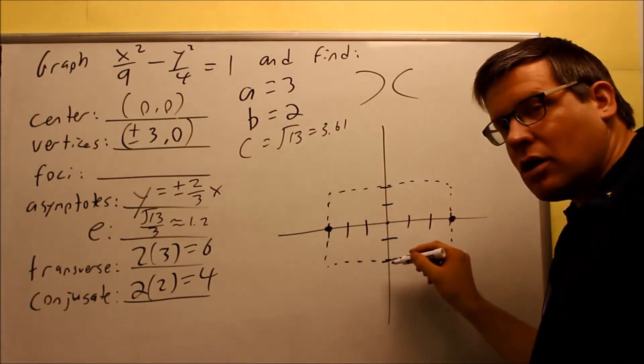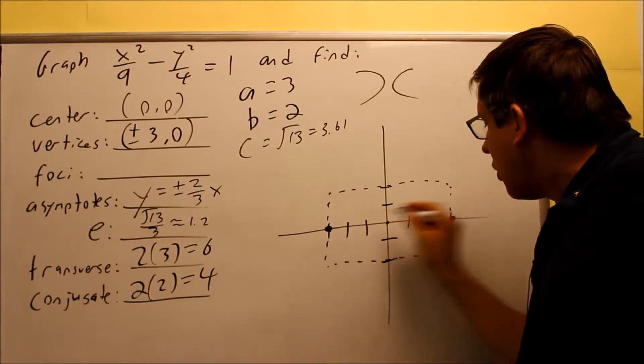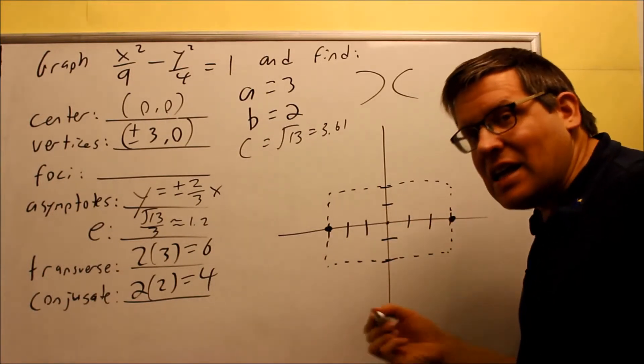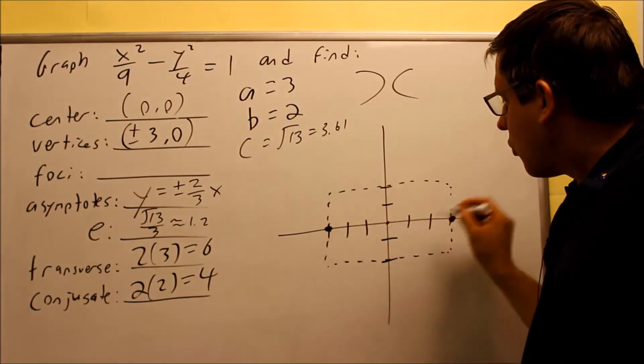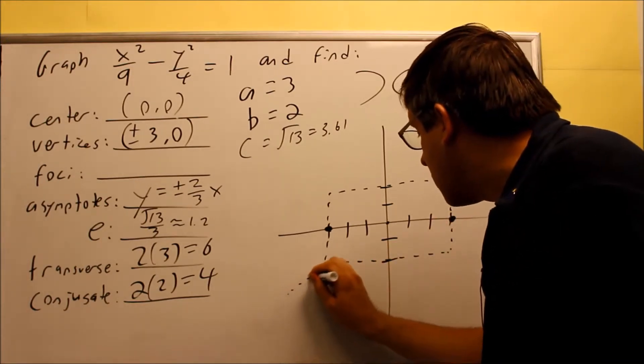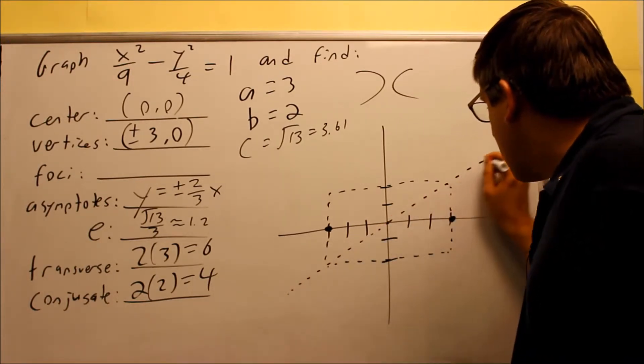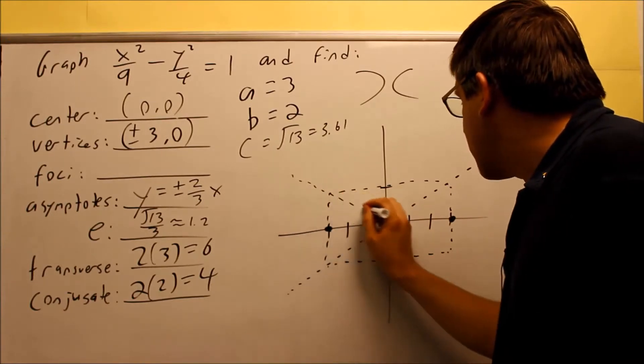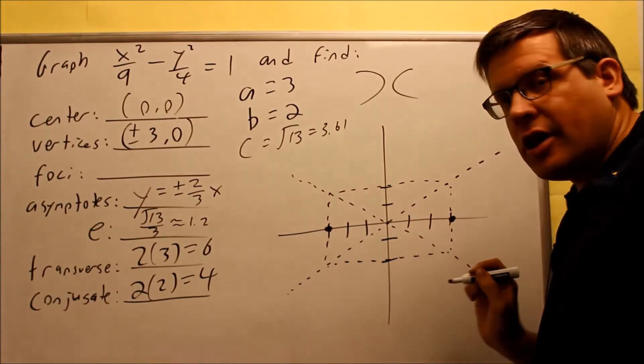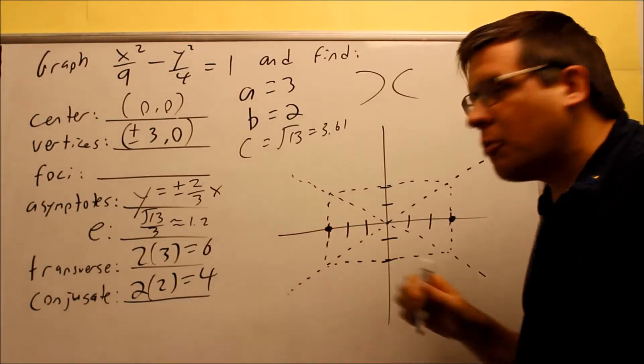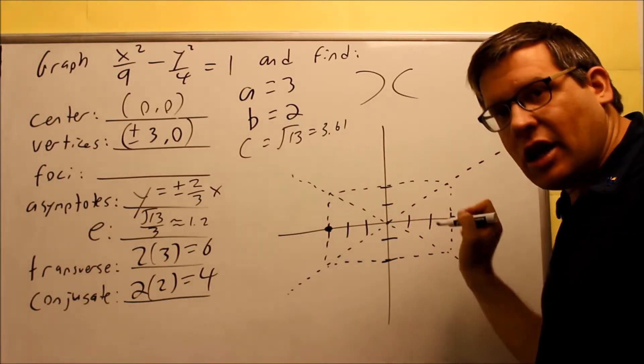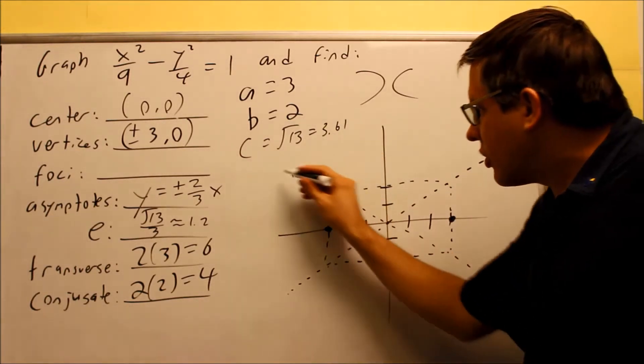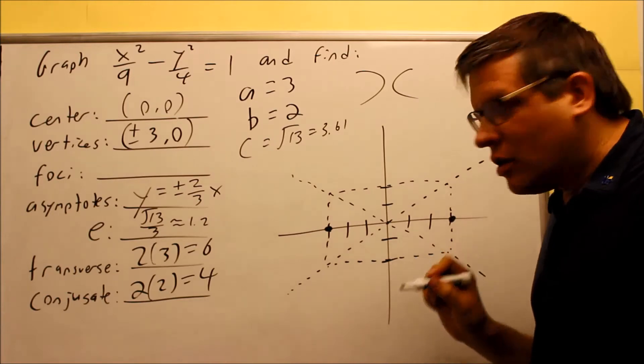A goes in the direction that's opening up, and on each end here when we went both directions with the a, that actually forms our vertices there. Your vertices are going to be plus or minus three comma zero. The end parts of the box, these are not going to be vertices, so the graph does not go through these two points here. It only goes through the points wherever a is at. Why do we have to draw a box? Because you're going to connect the corners with some dotted lines and these dotted lines are your asymptotes.